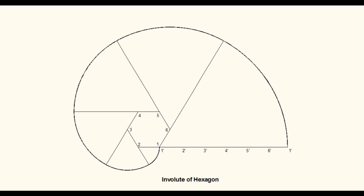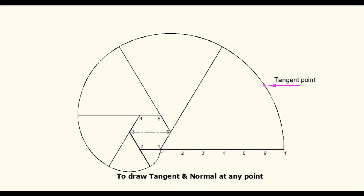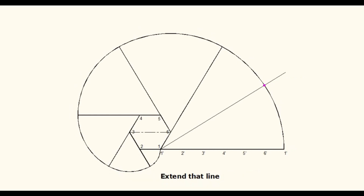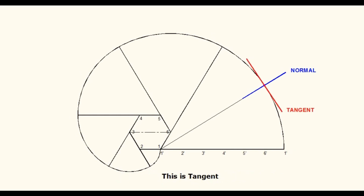To draw the tangent and normal: mark the point on the involute through which the tangent and normal are to be drawn. Join that point to the corner of the included angle of that arc segment and extend this line — this is the normal for the involute. Draw a perpendicular line to the normal through the same point — this line is the tangent.